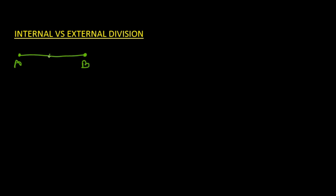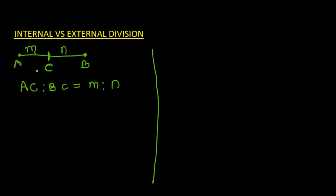Today we will see how to apply the section formula when a point dividing the line is not lying on the line — the point is lying outside the line, which is called external division. Let us first understand how external division is different from internal division. When point C divides line AB internally, it lies on the line AB, and if it divides in ratio m:n, then AC:BC = m:n.